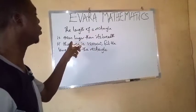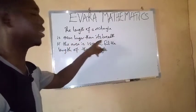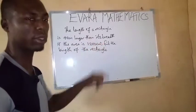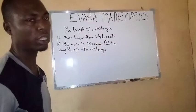The length of a rectangle is 40 cm longer than its breadth. If the area is 1,200 cm squared, find the length of the rectangle.